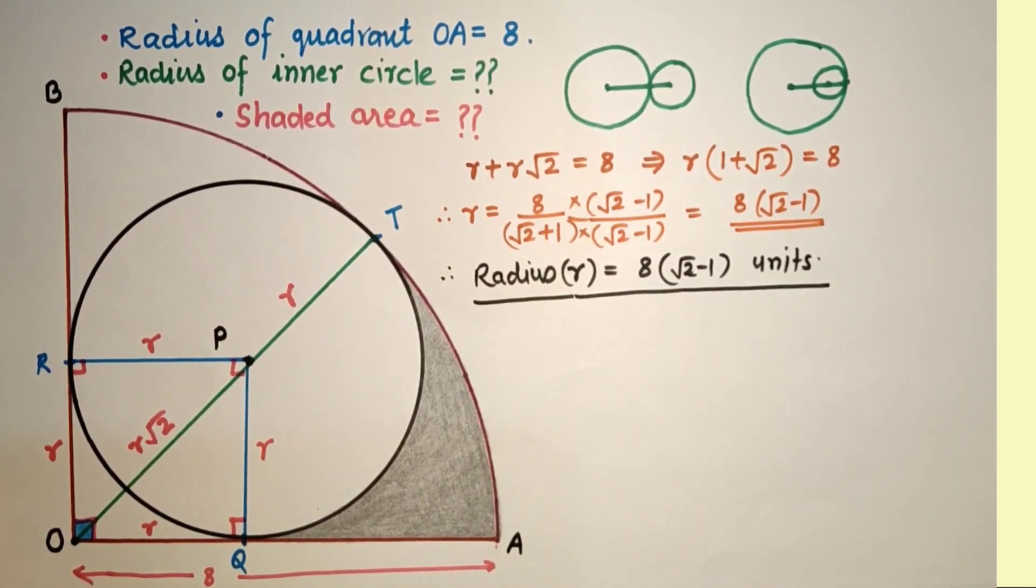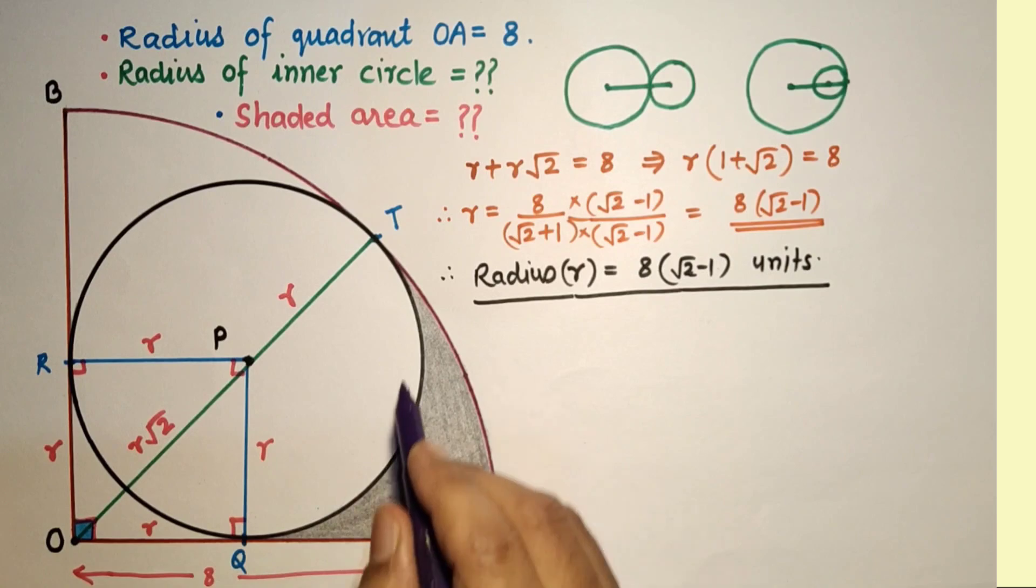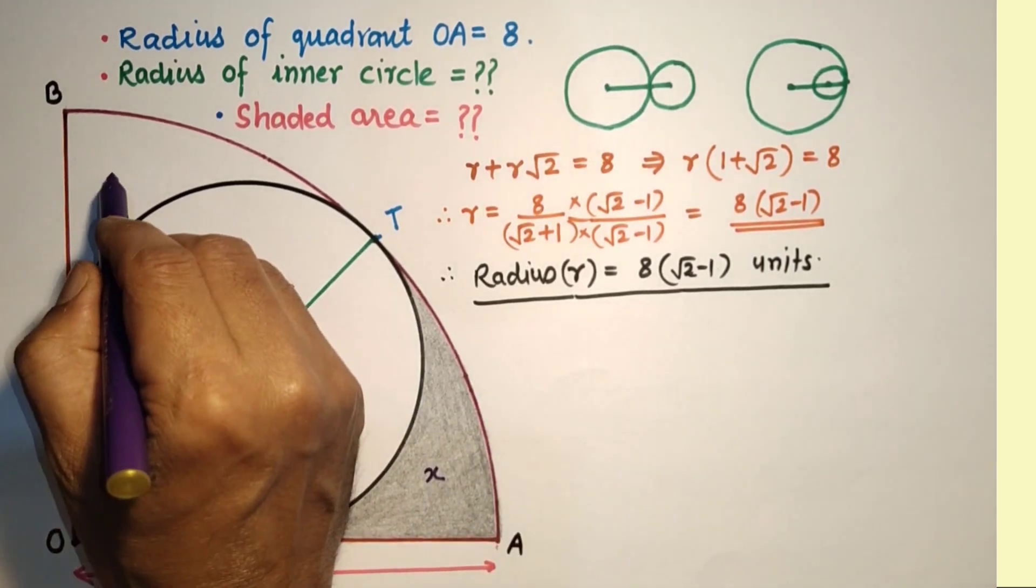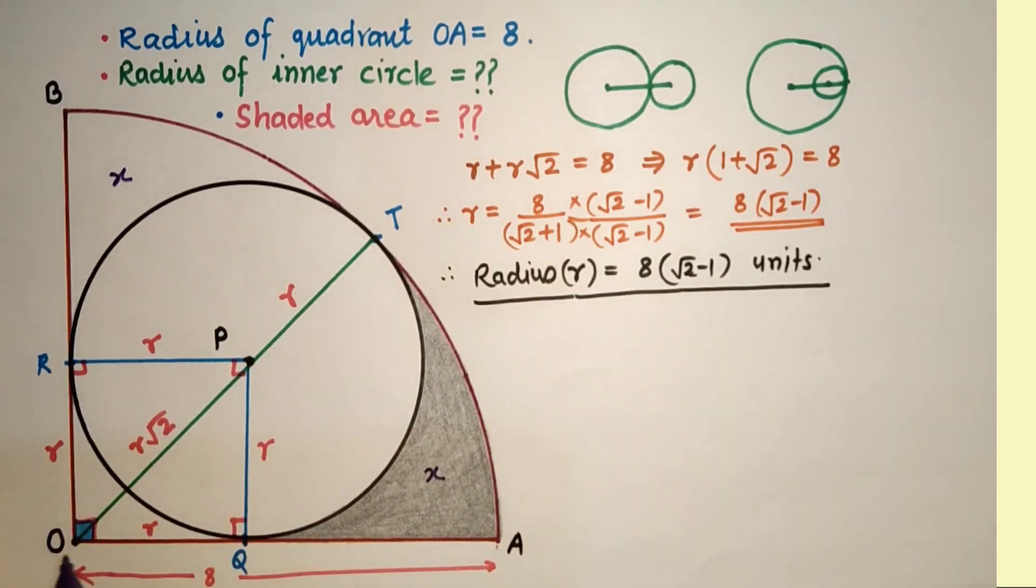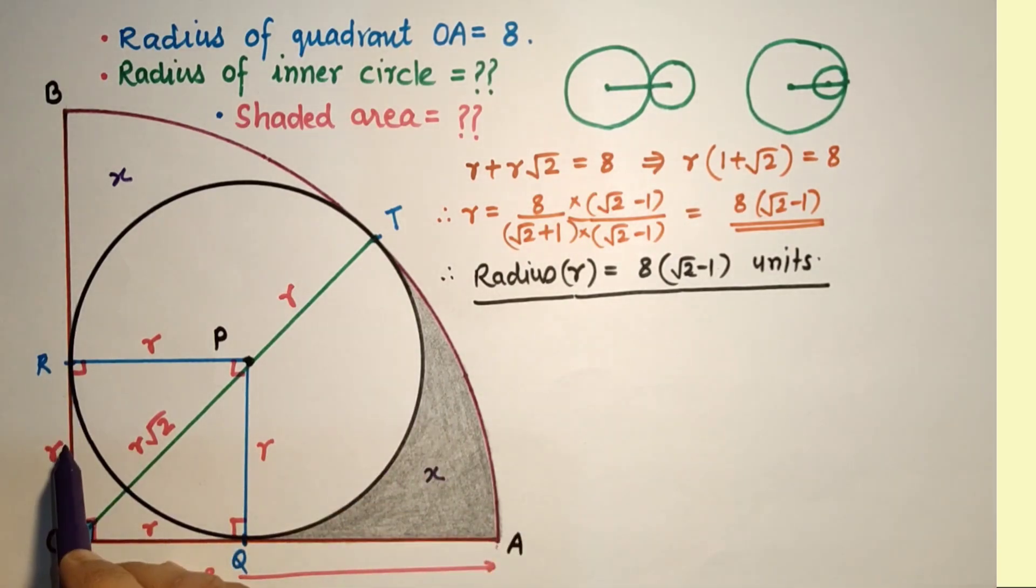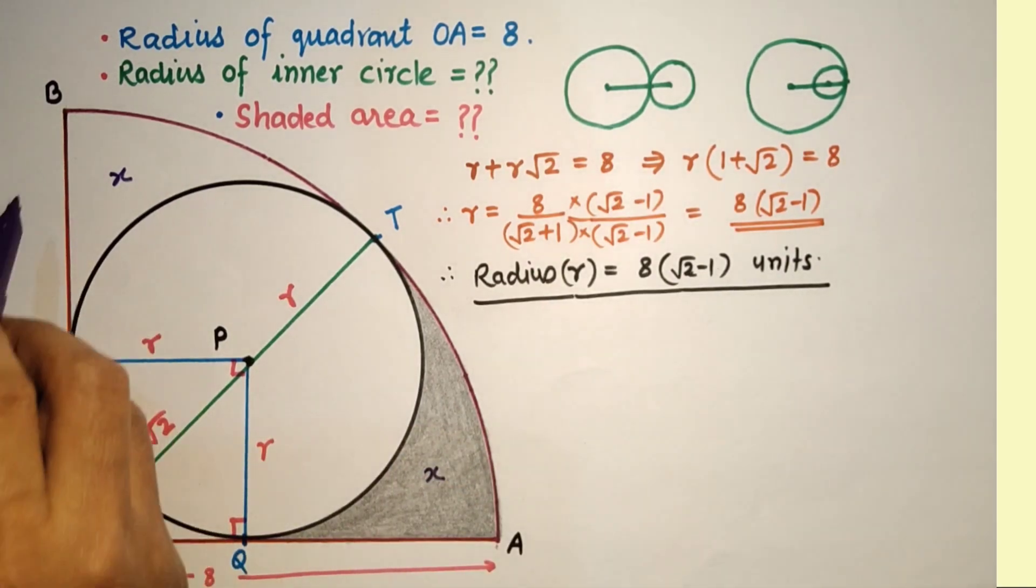Now to get the shaded area, let us suppose this is x, so this will also be x. If we subtract the circle's area and this area from the quadrant's area, we will get this x and this x, sum of these two.